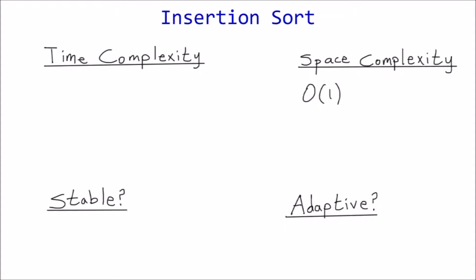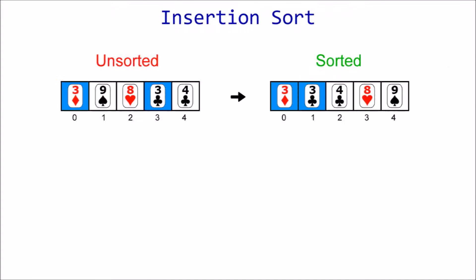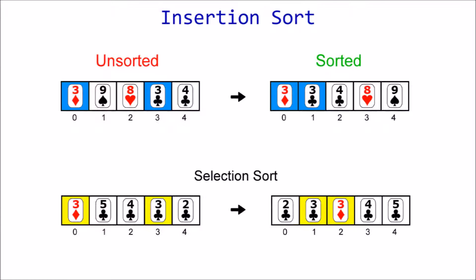A sorting algorithm is stable if the initial order of equal elements is preserved. Insertion sort is a stable algorithm because equal elements will never be swapped. We saw an example of this in the C++ demonstration. The three of diamonds was positioned before the three of clubs, both before and after the sort. In the selection sort video, we discovered that it is not a stable algorithm because the order of those two cards was reversed.